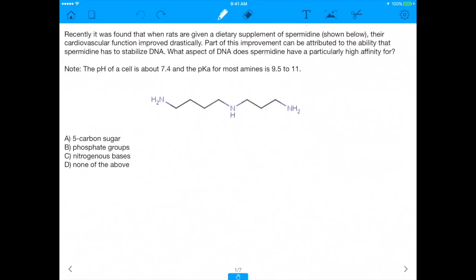But it says, recently it was found that when rats are given a dietary supplement of spermidine, shown below the structure, their cardiovascular function improved drastically. Part of this improvement can be attributed to the ability that spermidine has to stabilize DNA. What aspect of DNA does spermidine have a particularly high affinity for? So I love this question.